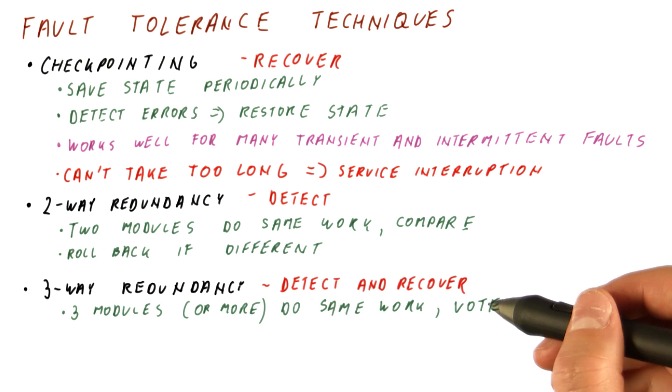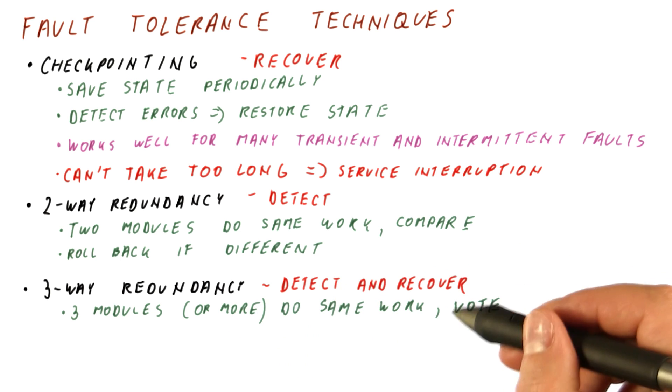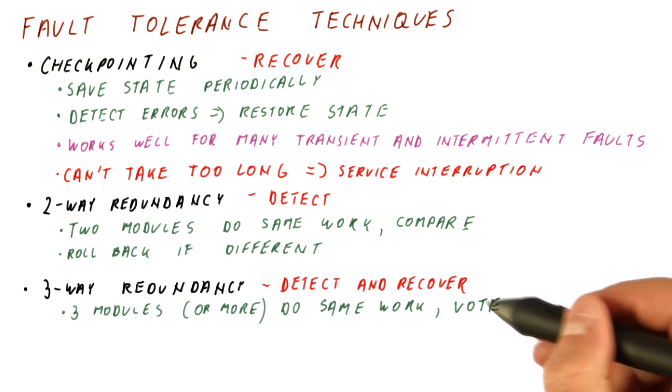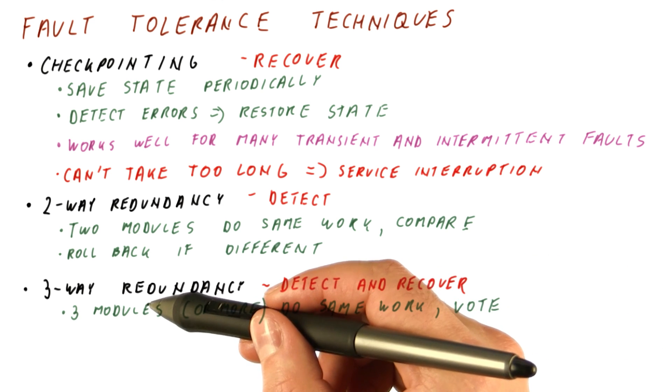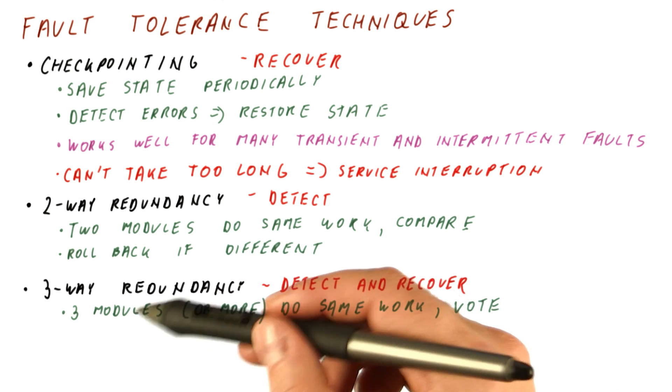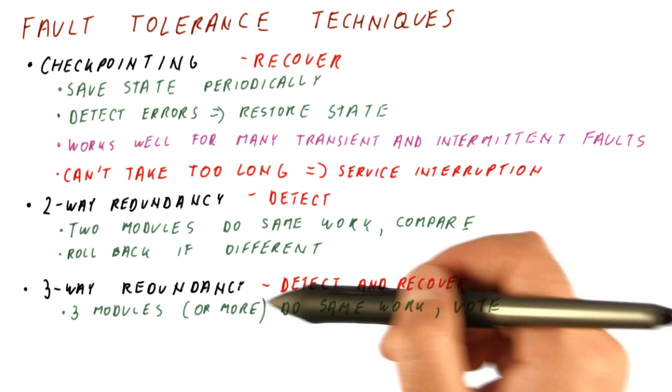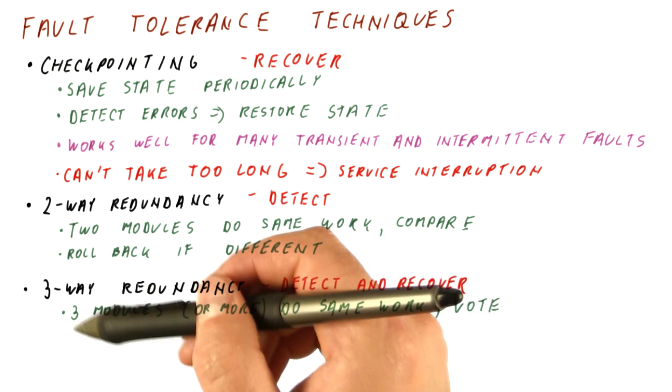If one module is malfunctioning, the two others will still produce the same result and that result will be elected by the vote as the overall correct result. The fault in one module becomes an error in that module but doesn't become an error at the system level because at the output of these three modules and their voter, we always have an error-free result.